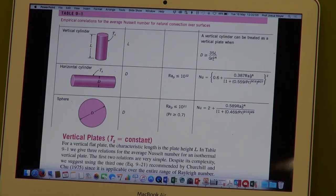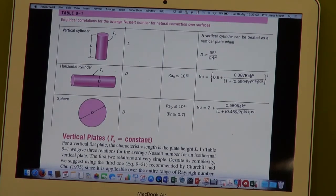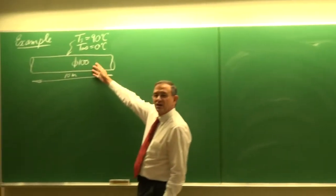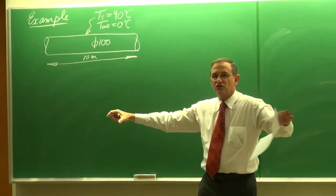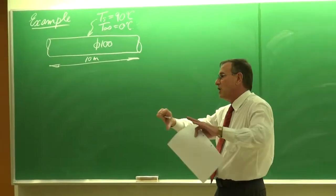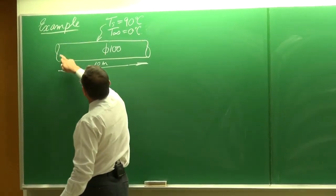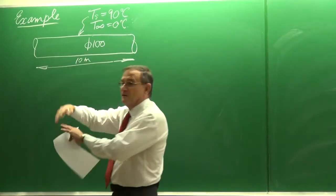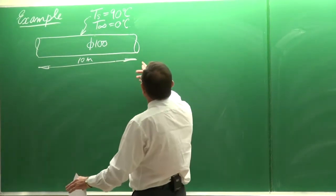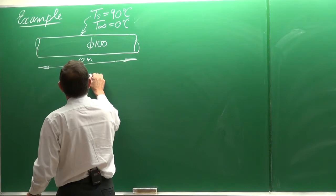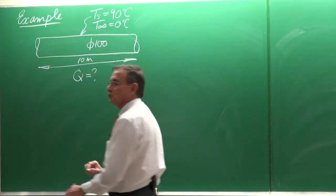Let's do two examples. The first example is that of a horizontal pipe with a length of 10 meters, an outside diameter of 100 millimeters, and a surface temperature of 90 degrees Celsius. It is an isothermal surface, meaning the temperature is constant all over the surface, and the environment temperature is 0 degrees Celsius. The question is to determine the heat losses from this pipe.